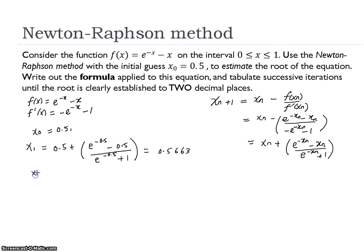So we will continue to substitute x2, so we will use this value 0.5663, then we will continue to substitute e to the power of negative 0.5663 subtract 0.5663, divide e to the power of negative 0.5663 plus 1. Then if we perform the calculation, we get 0.5671.